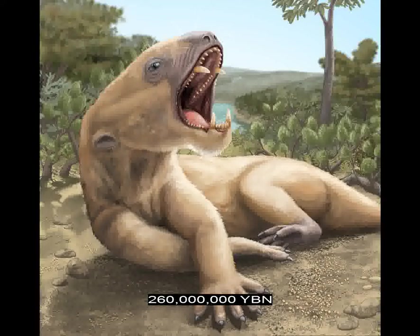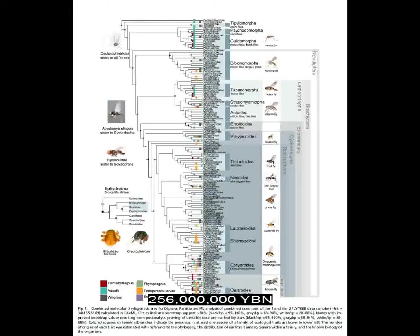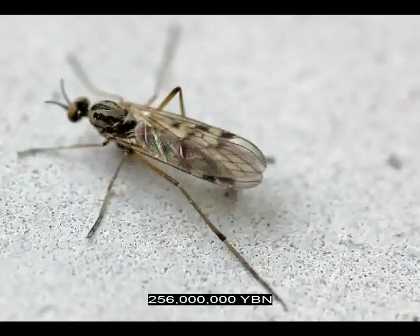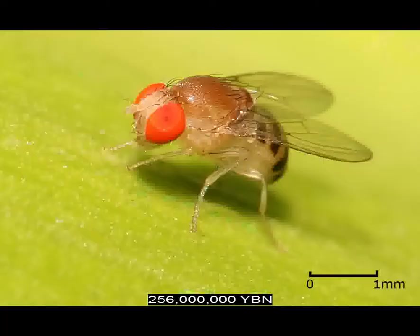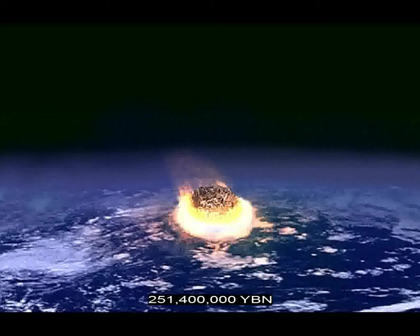Ray-finned fishes — gars. Holometabola Diptera — true flies, single pair of wings, ancestor of mosquito, gnat, fruit fly, and housefly. Reptiles tuataras. Largest mass extinction in history. End of the Paleozoic and start of the Mesozoic era, and the end of the Permian and start of the Triassic period.